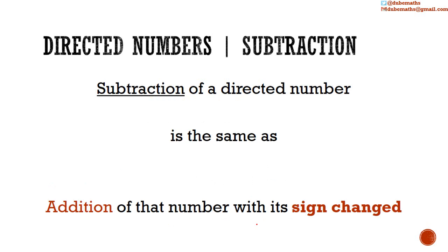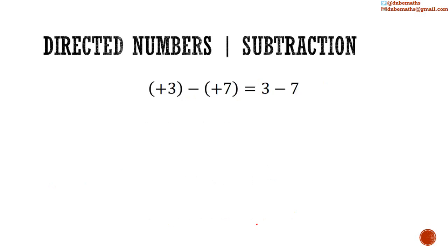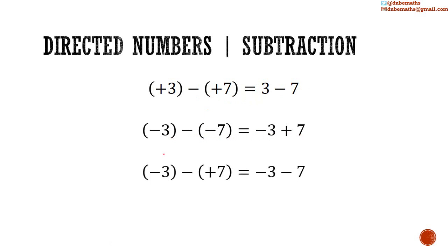The rule for subtraction: subtraction of a directed number is the same as addition of that number with its sign changed. So, positive 3 subtract positive 7 is equal to positive 3 added to negative 7. Similarly, negative 3 subtract negative 7 is the same as negative 3 added to positive 7. Negative 3 subtract positive 7 is the same as negative 3 added to negative 7. And positive 3 subtract negative 7 is the same as positive 3 added to positive 7.